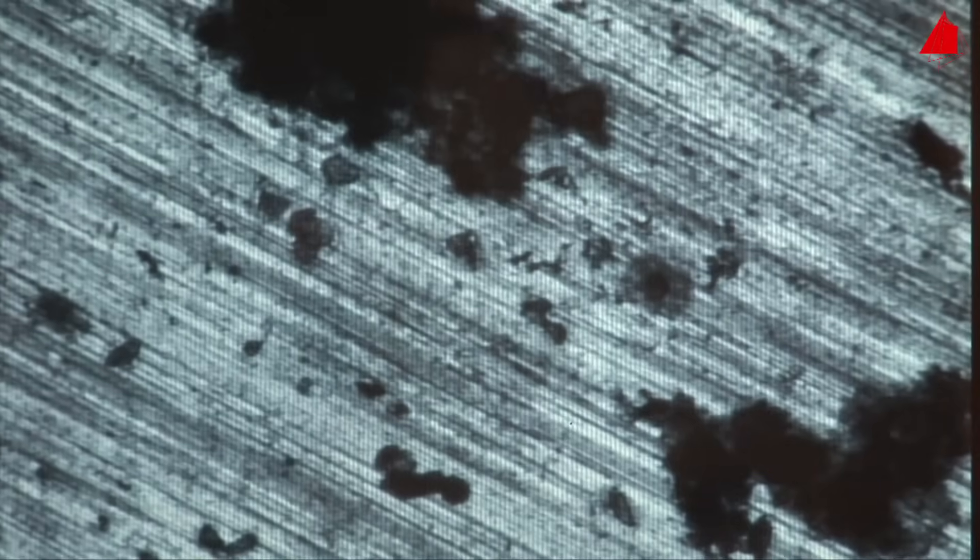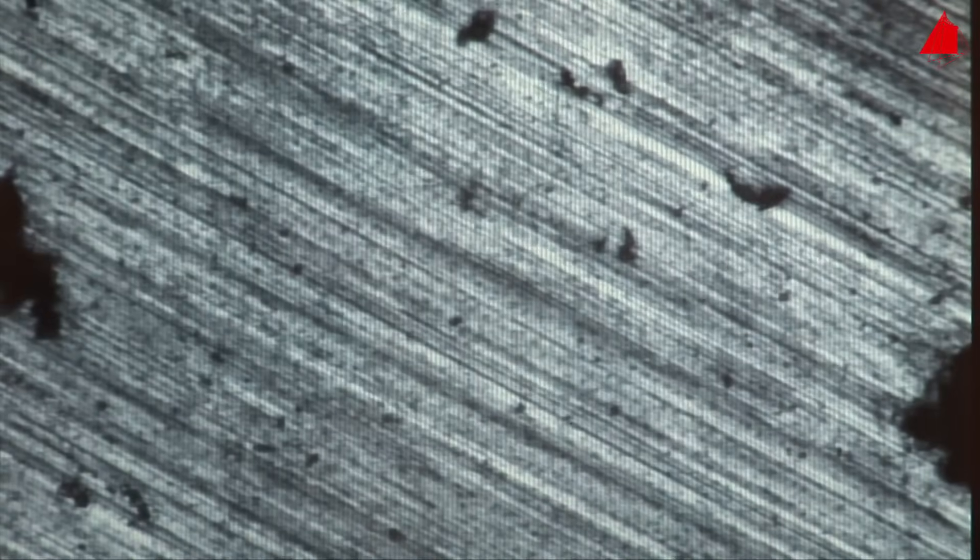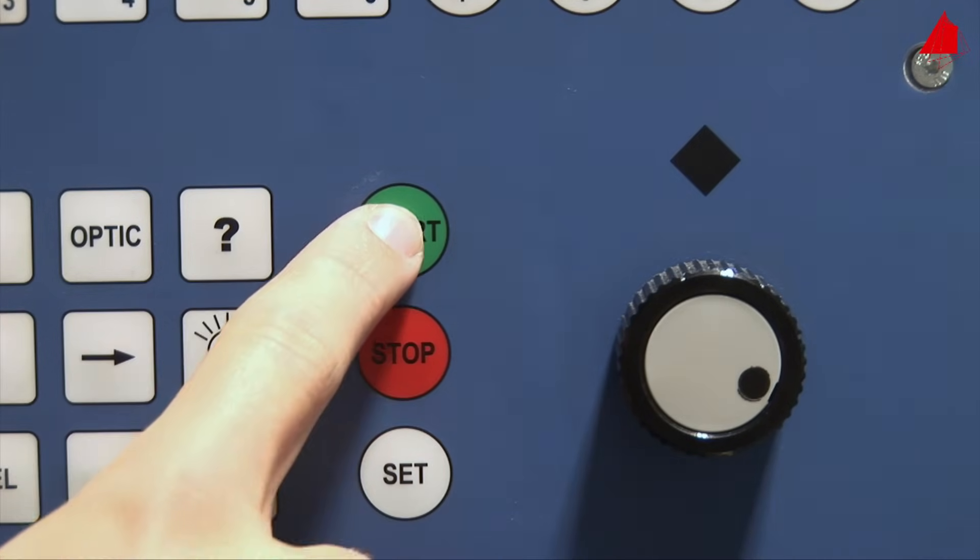After bringing the test piece surface into focus, he selects the exact spot where the hardness test is to be made. By pushing the start button, the hardness test procedure begins.